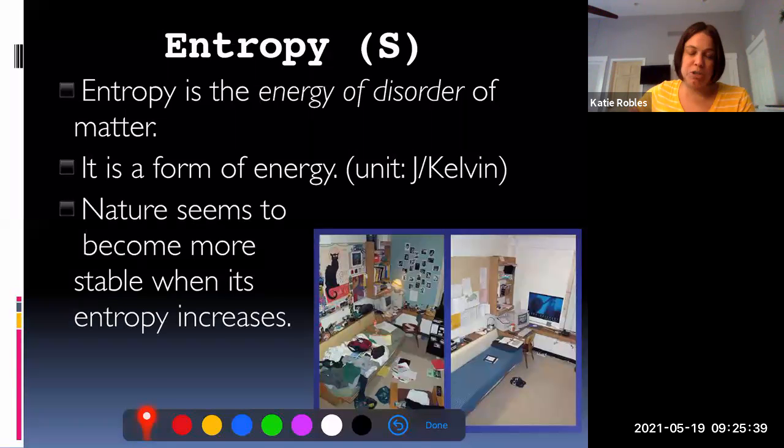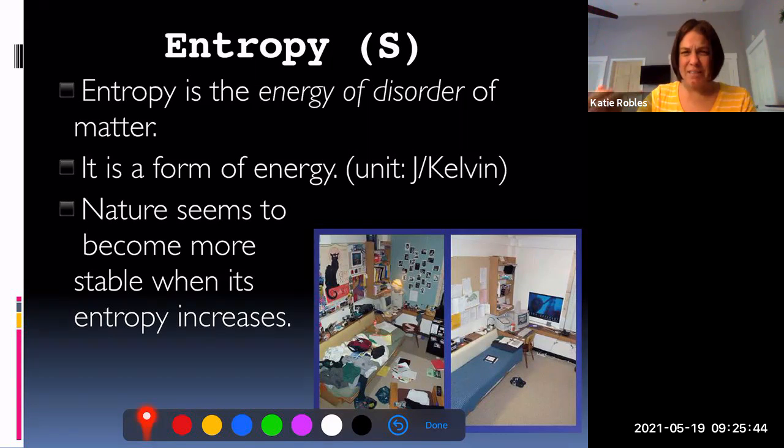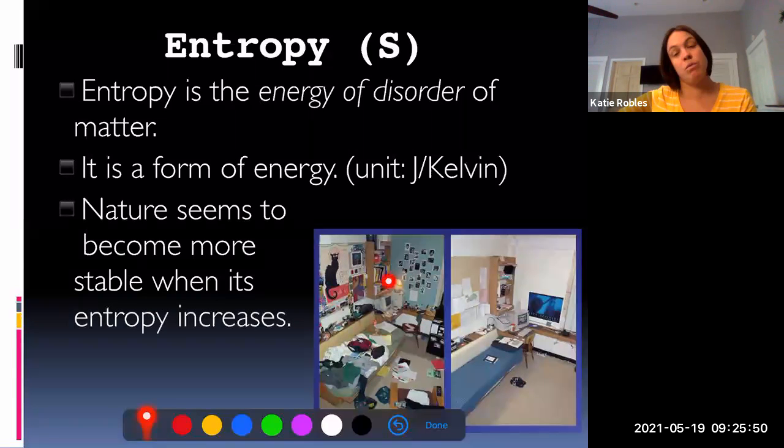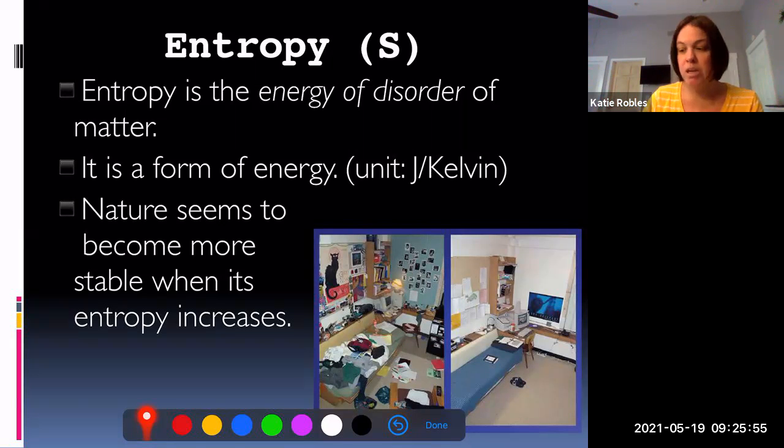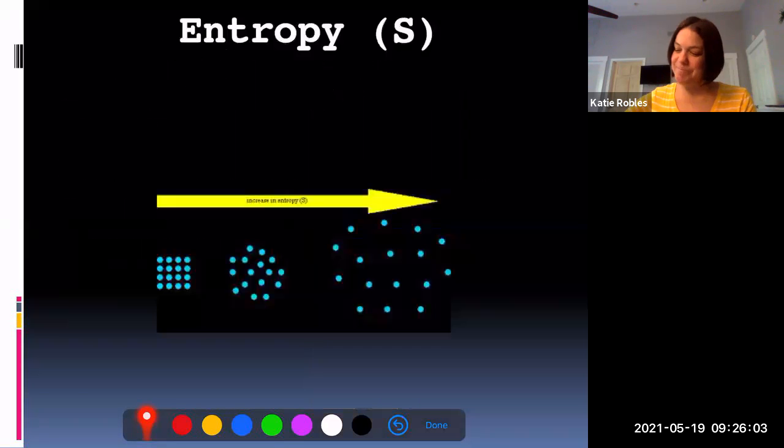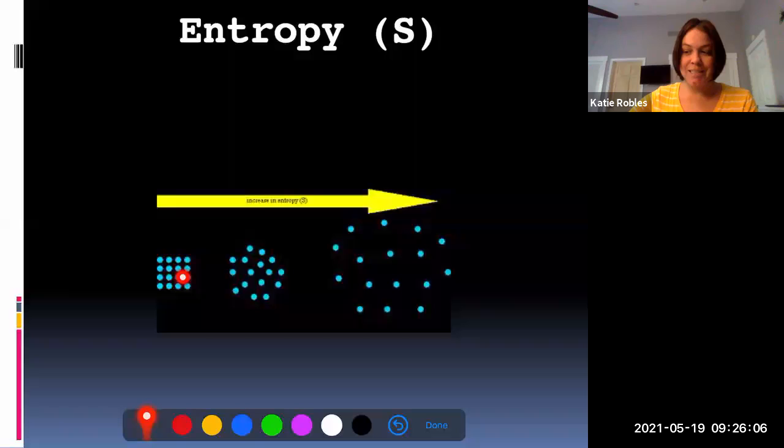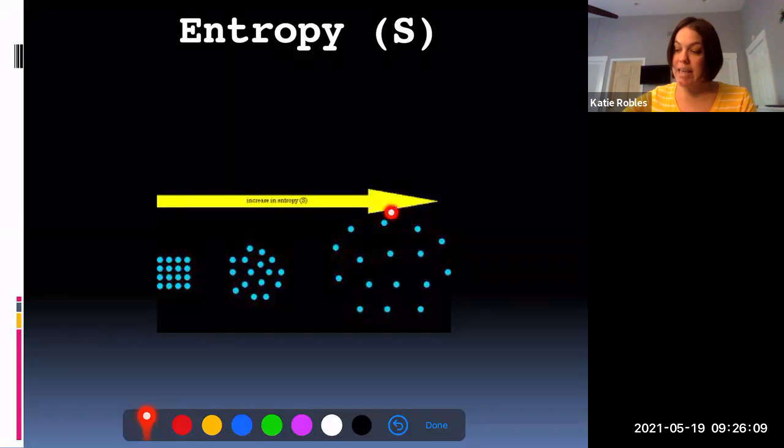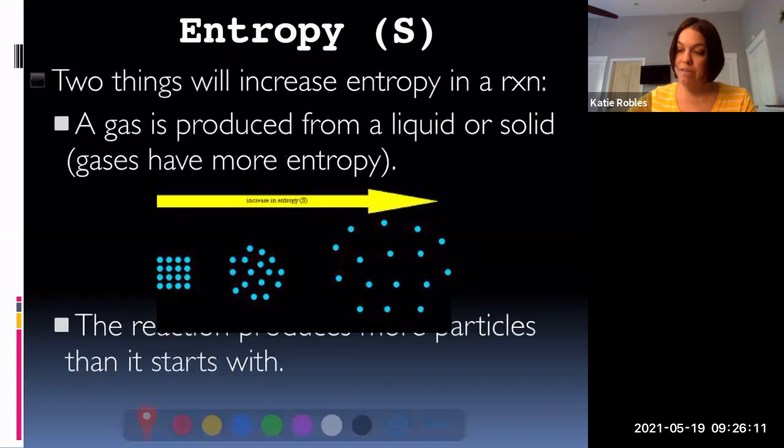All right, it is a form of energy, it does have a unit—it's in joules per Kelvin—because it actually is determined by temperature, which I'll talk about in a sec. Nature wants to be messier, right? So I always use the joke if you have a really messy room, you can tell your parents that you're just moving towards more entropy, you are becoming more stable as nature intended you to be. All right, entropy—like I said before, solids have the least amount of entropy and gases have the most amount of entropy. So that's a really easy thing to think about when you're talking about entropy in the reaction.